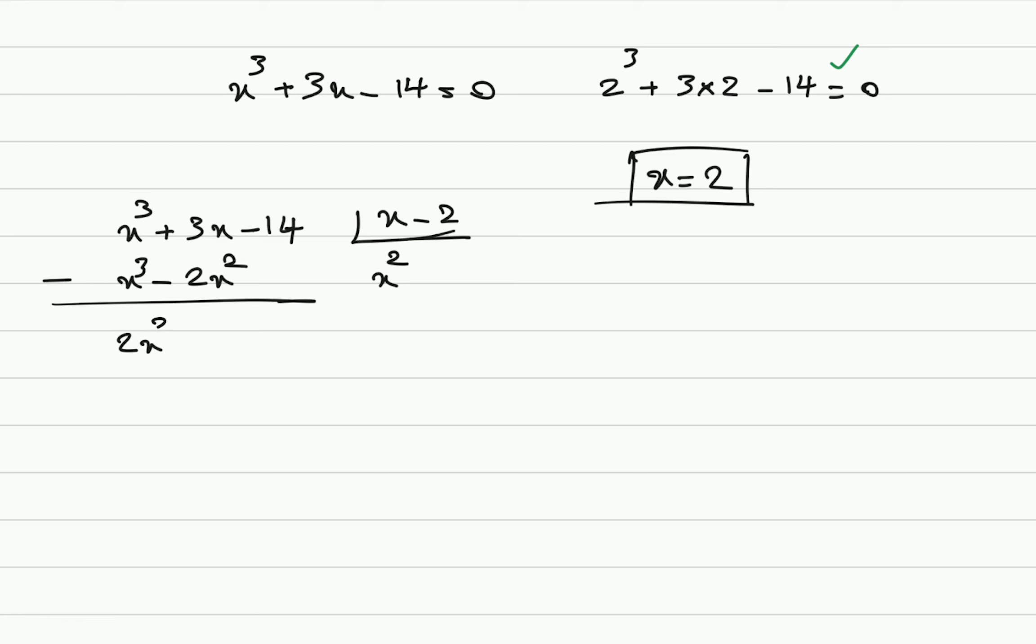So, 2 times x squared plus 3 times x minus 14. And here we need 2 times x, 2 times x squared minus 4 times x, and then we should subtract it. Here we have 7 times x minus 14. For this, we say plus 7. 7 times x minus 14. All good. This is what we were looking for.